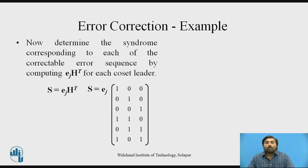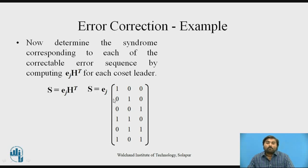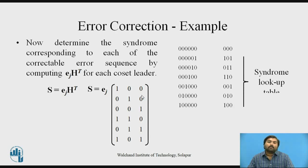To decode, the syndrome is obtained for each correctable error pattern using the formula: S = E_j × H^T, where H^T is the transpose of the parity check matrix, and E_j is the error pattern from the first column of the standard array. Using this, if you substitute each error pattern, you will get the syndrome for each one, forming a syndrome lookup table.